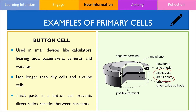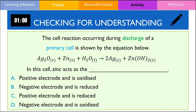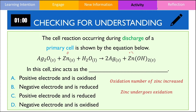Using your understanding of galvanic cells, have a go and see if you can answer the following question. Given the chemical equation, identify the type of electrode zinc metal is and whether it undergoes oxidation or reduction. To answer this, we compare the oxidation numbers of zinc in the reactants and products. The oxidation number of zinc metal is 0 and in the salt it is positive 2. Increasing the oxidation number indicates zinc is oxidised, and we know that oxidation occurs at the anode in a galvanic cell when the battery is discharging. Hence, the best answer is D since we know that the anode is negatively charged.